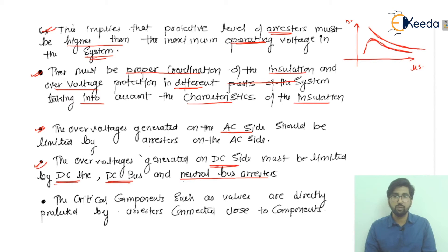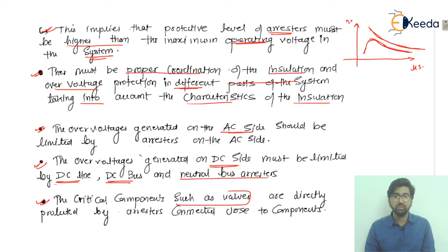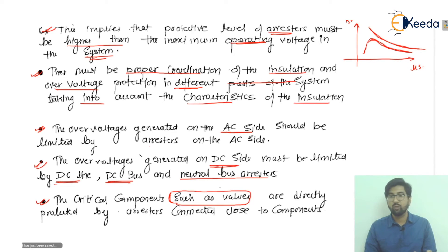Just as we handle protection for the AC side, we do the same for the DC side. The critical components, such as the valves, are the main critical components which may be harmed or damaged easily, even under small or sensitive fault conditions.